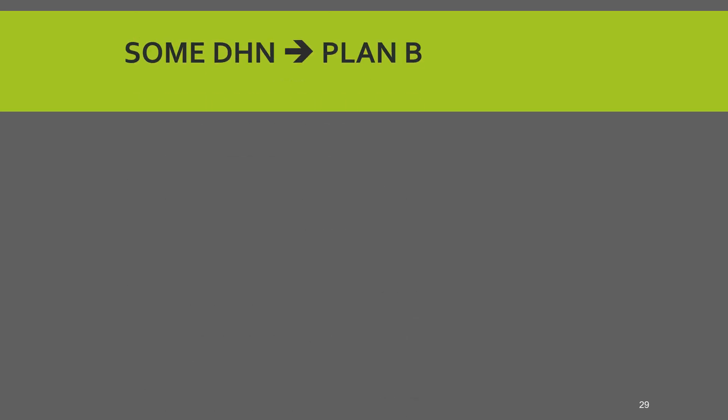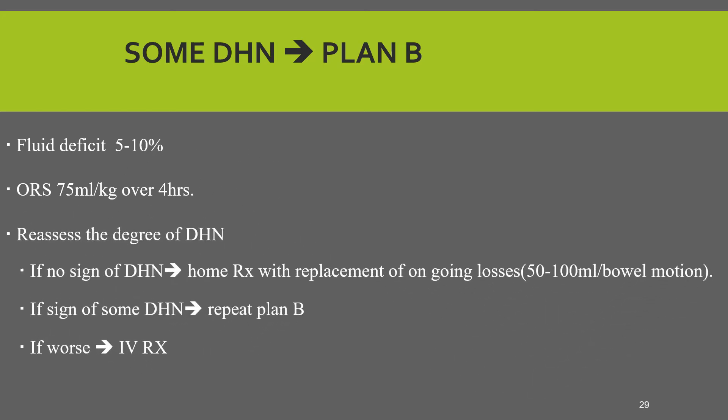The second type of management is for some dehydration treated according to plan B. Fluid deficit is estimated at five to ten percent; we should give the child ORS 75 ml per kg over four hours, then reassess the degree of dehydration. If there is no sign of dehydration, go to treatment plan A and give ORS and zinc at home. If signs of some dehydration remain, repeat plan B. If it becomes worse, treat as severe dehydration.